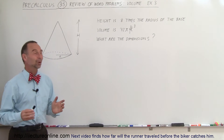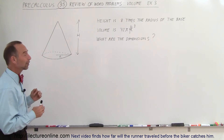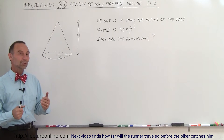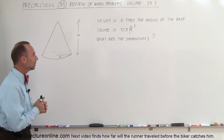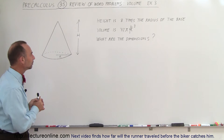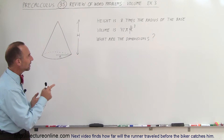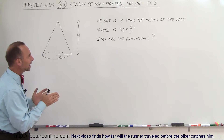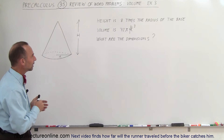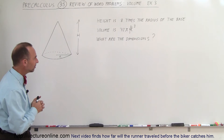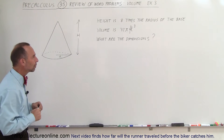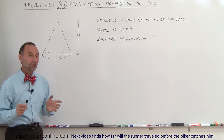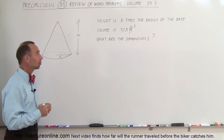Welcome to our lecture online. For those who forgot how to work with cones, let's do a volume problem dealing with a cone. We are given that the height is 8 times the radius of the base, and the volume is 72 pi cubic feet. What are the dimensions?